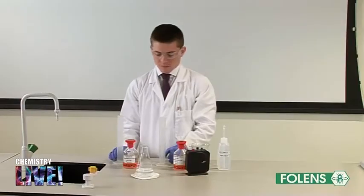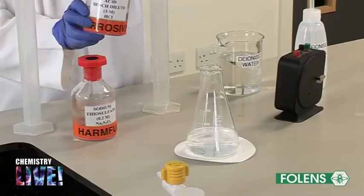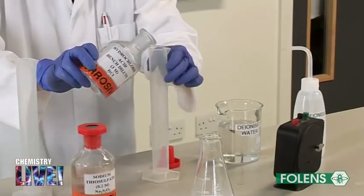Using the other graduated cylinder, pour 10 centimeters cubed of the hydrochloric acid solution into the conical flask.